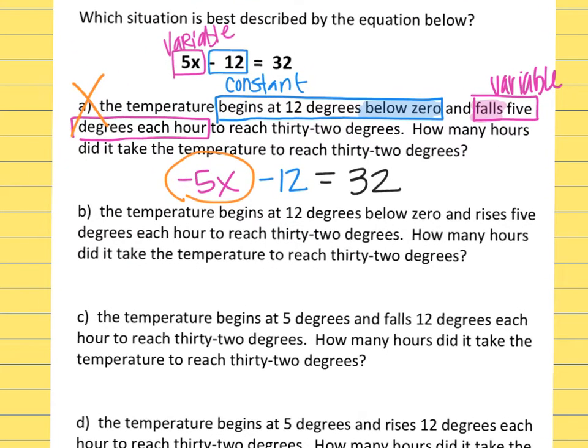The second one, it says the temperature begins at 12 degrees below zero and rises 5 degrees each hour to reach 32 degrees. How many hours did it take the temperature to reach 32 degrees? So again, I'm going to read through here. Begins at 12 degrees below zero, the below zero shows me that it's negative 12. But this time the question says it rises 5 degrees each hour, and that clue of rises tells me that 5 is positive now, and it is the variable.